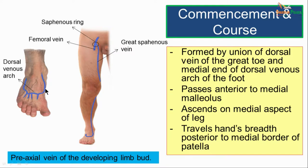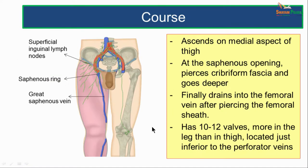Once formed, the great saphenous vein passes upwards going anterior to the medial malleolus — about 2.5 cm anterior to the medial malleolus. It ascends on the medial aspect of the leg, about one finger's breadth posterior to the medial border of the tibia. It then goes posterior to the knee joint, about a hand's breadth posterior to the medial border of the patella. It further ascends on the medial aspect of the thigh and reaches the saphenous opening — a round opening in the fascia lata, lying about 2 cm below and lateral to the pubic tubercle.